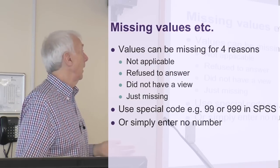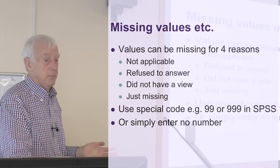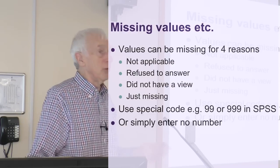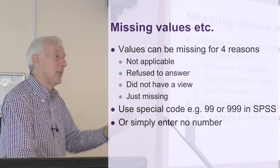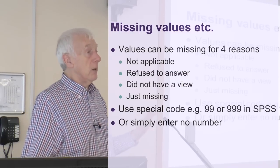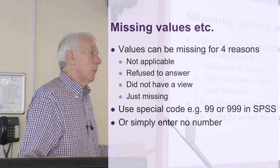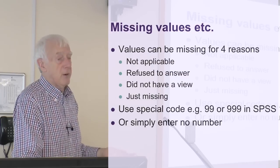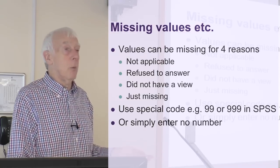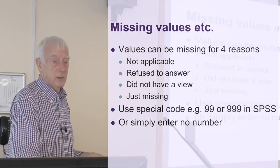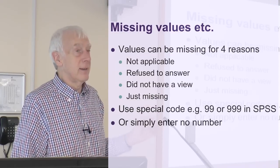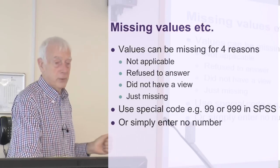A second reason why things are missing is because they refuse to answer — they just don't want to tell you. All respondents have the right not to answer your questions; that's part of the ethics of doing research of this kind. You give people the right to hold things back. There are obvious reasons why they might do that: they might be embarrassed, or they really don't want people to know the answers. Or maybe they're just fed up and want to leave, so they refuse to answer.